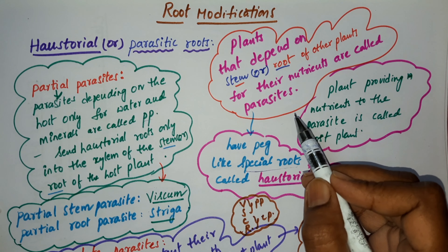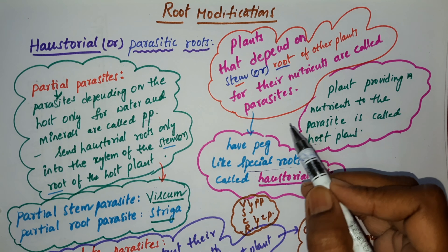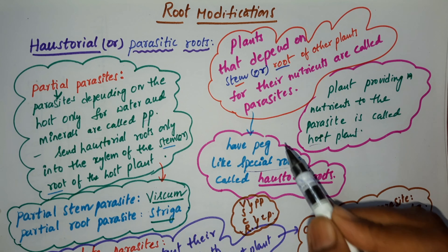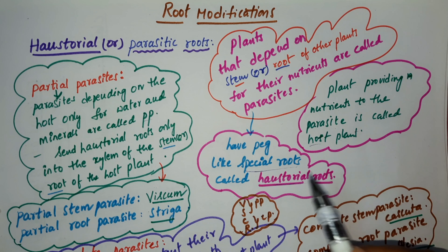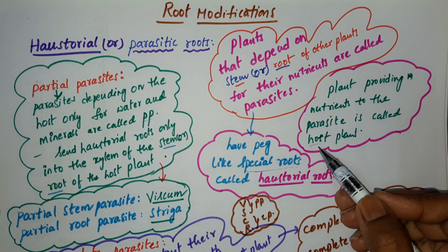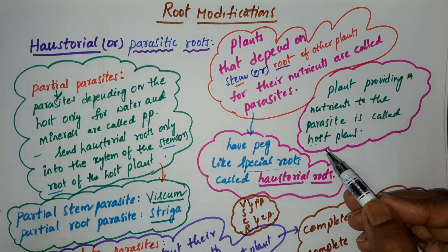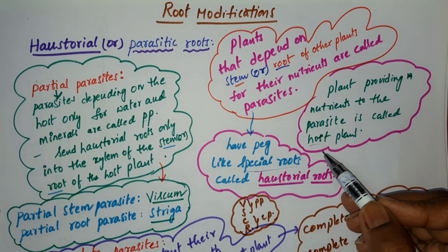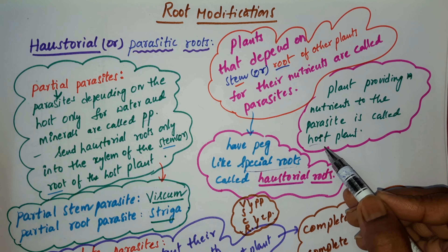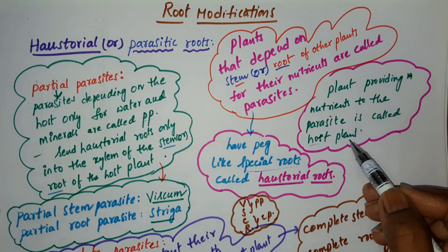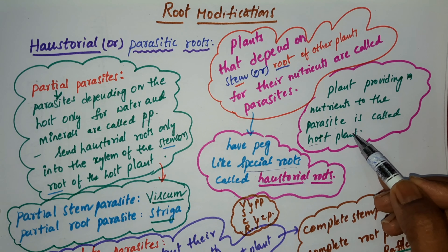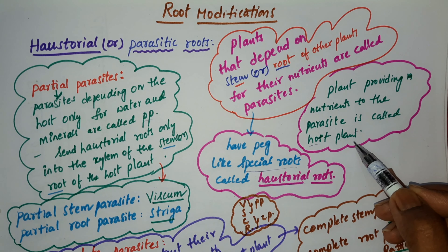In such parasites, what kind of roots do they have? These parasites have peg-like special roots called haustorial roots. The parasite depends on another plant, and that plant provides nutrients to the parasite. The plant providing nutrients to the parasite is called the host plant.